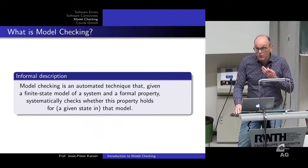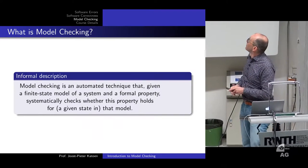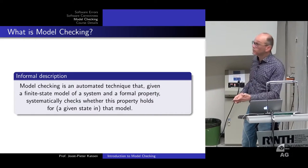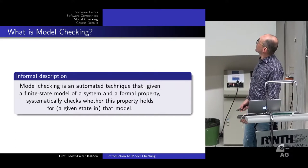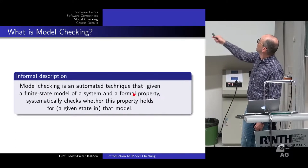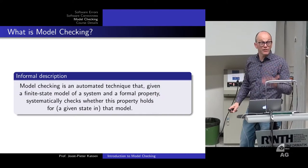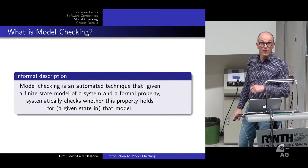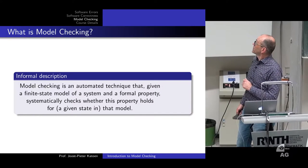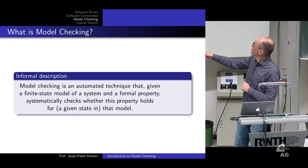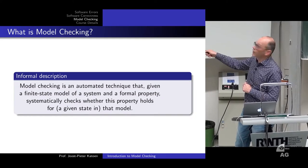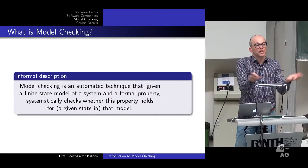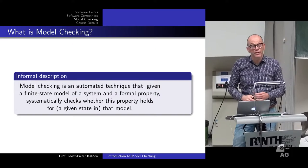What is model checking in a nutshell? Model checking is an automated technique that takes as input a finite-state model and a formal property — typically written in a temporal logic formula — and systematically checks whether the property holds for that model, for instance in the initial state of the system.